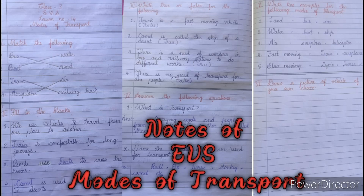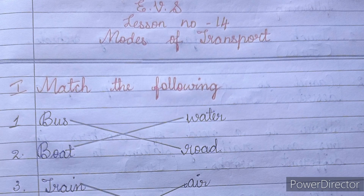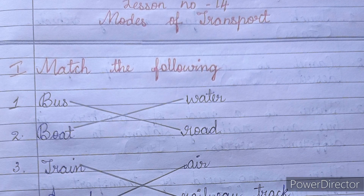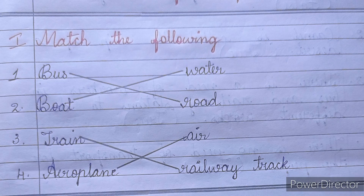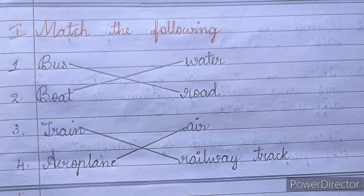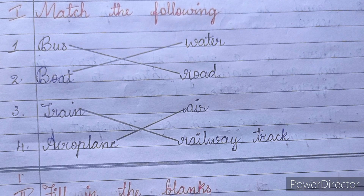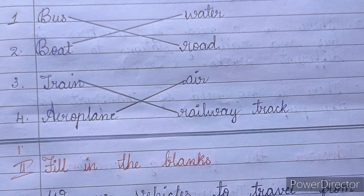Hello everyone, we have the notes of EVS Class 3, Lesson Number 14 - Modes of Transport. First main: Match the following. We have a left side and right side. The words we need to match are: bus - road, boat - water, train - railway track, aeroplane - air.